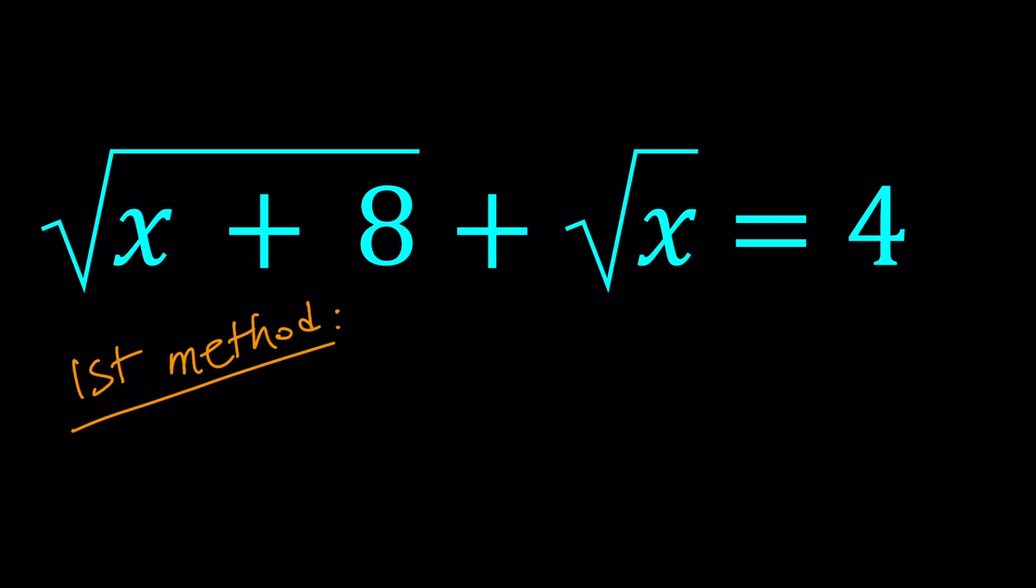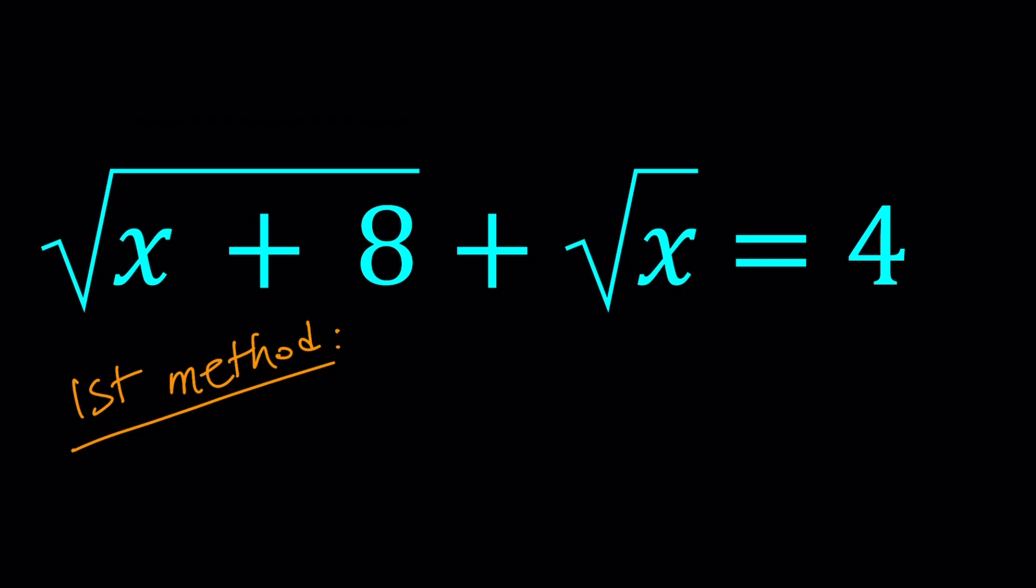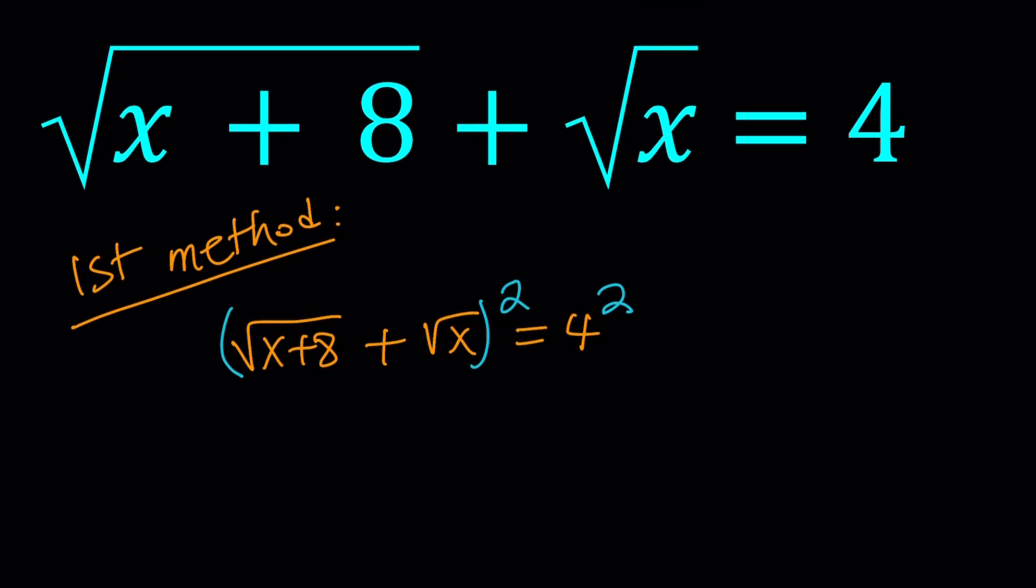So for my first method, I would like to clear the radicals. There's a couple different ways to do it. We can call this 1a and 1b. One method is just squaring both sides. Let's go ahead and do it. So this is equal to 4, and we can just go ahead and square both sides. Obviously, squaring introduces some extraneous solutions, so we have to check them at the end.